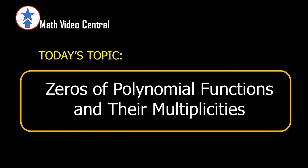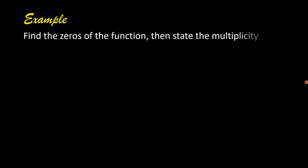Today's topic: zeros of polynomial functions and their multiplicities. Example: find the zeros of the function then state the multiplicity. F of x equals x cubed minus 8x squared plus 16x.